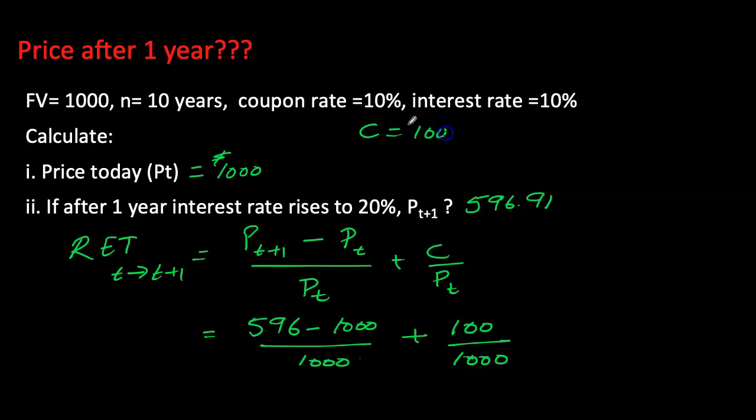The 10% coupon bond is giving me a coupon payment of 100. I must include that, and this first part gives me my rate of capital gain as negative 40.31%, plus my current yield of 10%. Overall, my return on the bond is negative 30.31%.